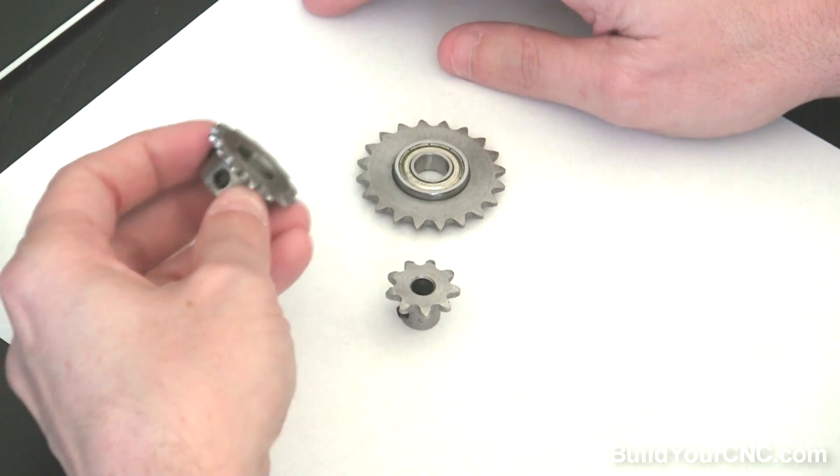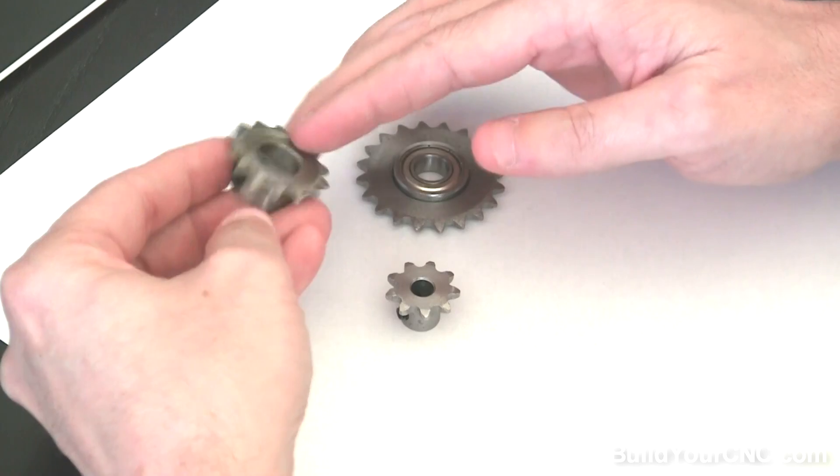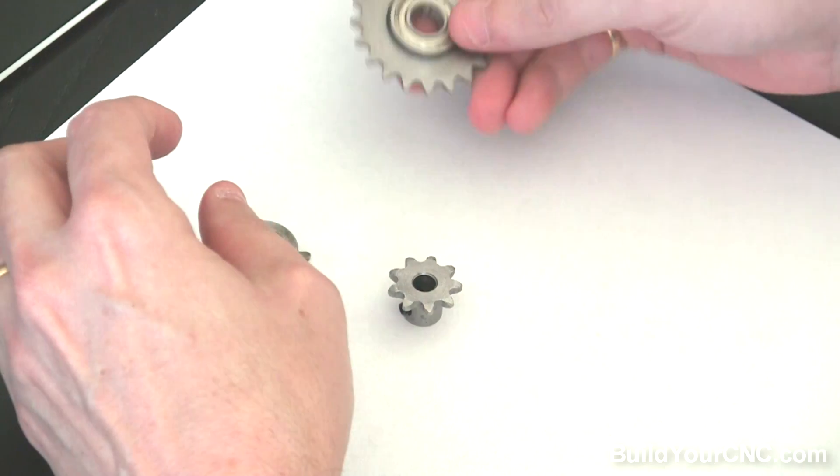There are many varieties of sprockets, but generally there are two types or two categories. And these two categories are drive sprockets and idler sprockets.